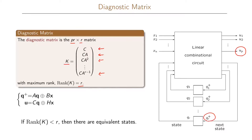If K has full rank, that is when the rank of K equals R, then we have no equivalent states. But if the rank of K is less than R, then there are equivalent states in our linear sequential circuit.